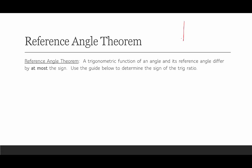So what does this mean? This means that if we have an angle that terminates here, and here's our reference angle theta-hat, that means that any trigonometric function — say sine of theta — is either equal to sine of theta-hat or it's equal to negative sine of theta-hat. So if our reference angle is 45 degrees, then sine of 45 degrees is either root 2 over 2 or negative root 2 over 2.